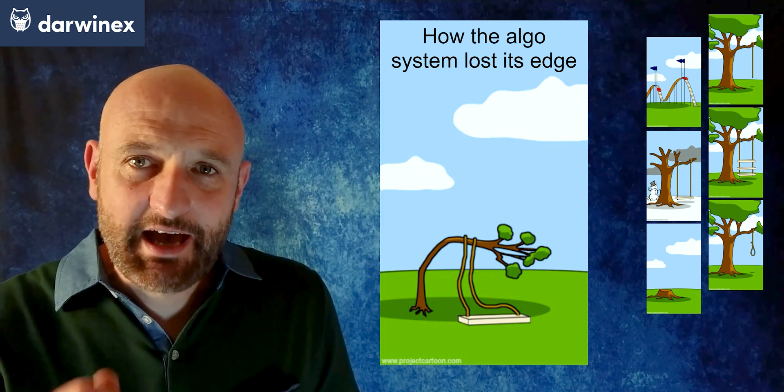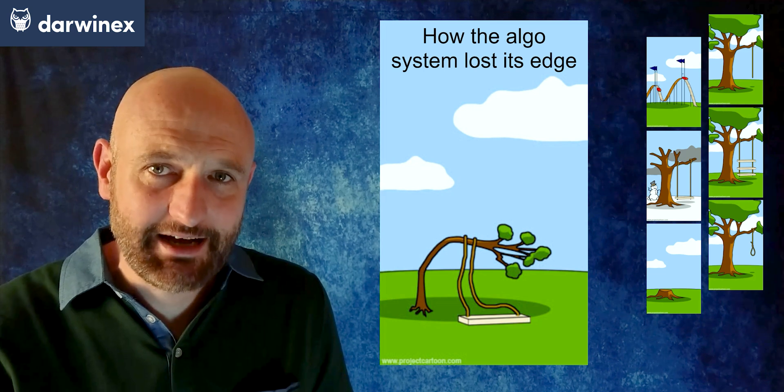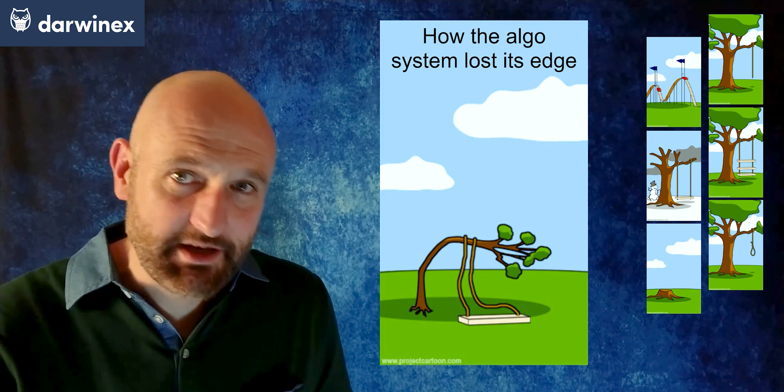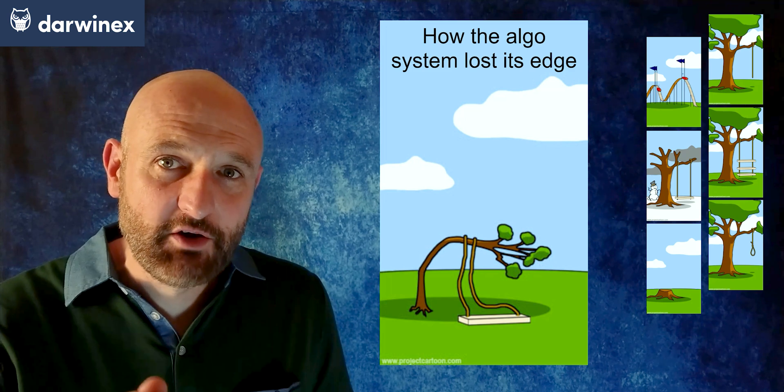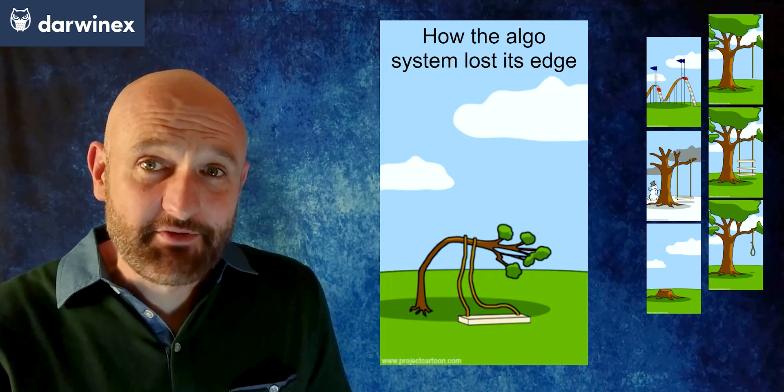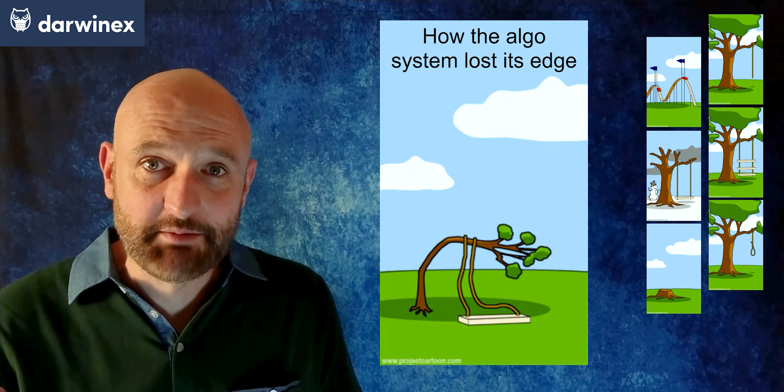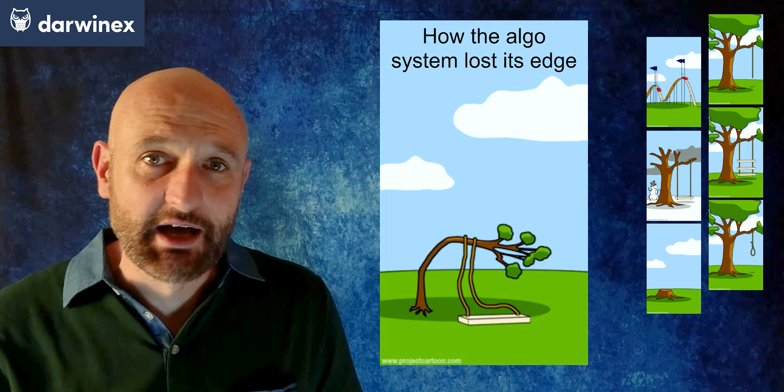But you need to be careful. Don't confuse poor results in your live account because of market dynamics changing with poor results because you've overfitted during optimizations. If you have overfitted, then you've probably never seen good results for any extended period of time in your live account.